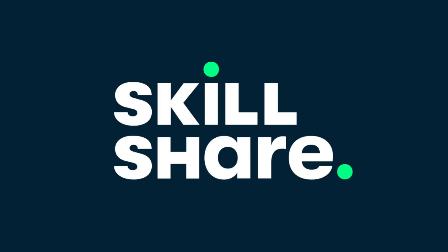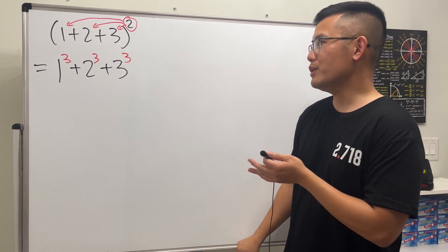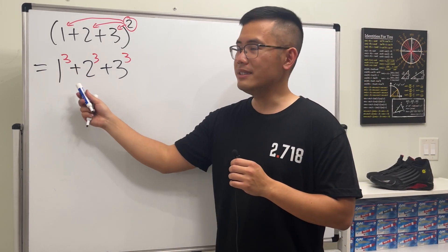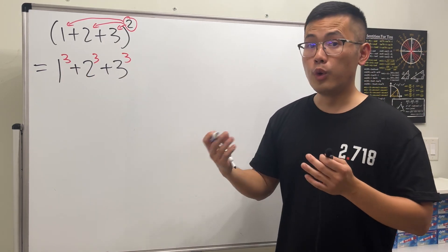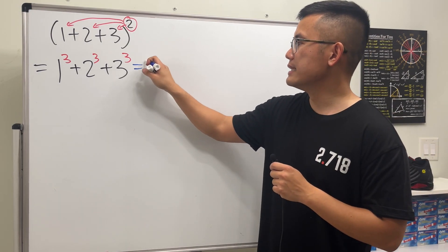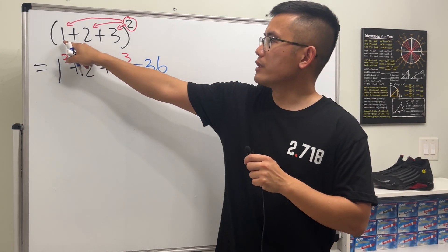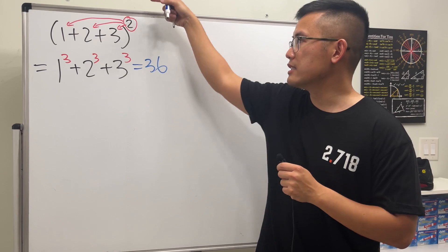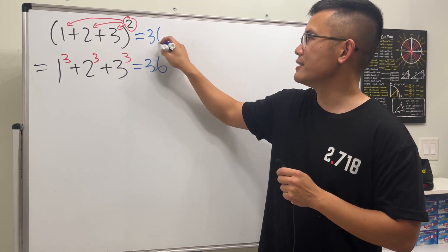Guys, don't trust me, watch. Let's check this out. This is 1, this is 8, this is 27. When we add them up we will get 36, and if we work out the inside, which is 6, and then square that, we will also get 36.